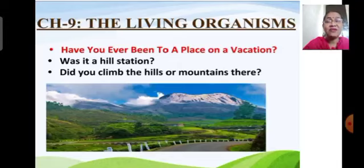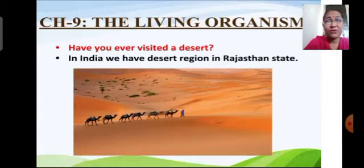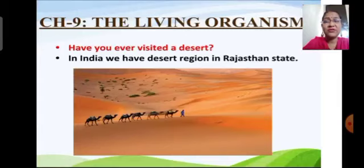Have you ever visited a desert, or do you have any idea how desert conditions are? In India, we have a desert region in Rajasthan state. The most peculiar animal we find there is the camel. The weather conditions of the desert are very hot. We barely find any plants growing in deserts because availability of water is very less. The type of plants we find there are cactus plants, which are very thick, hard, and thorny.